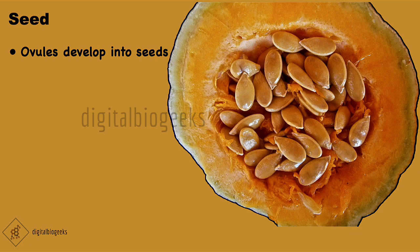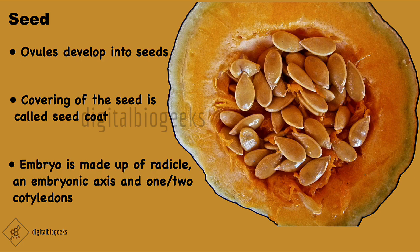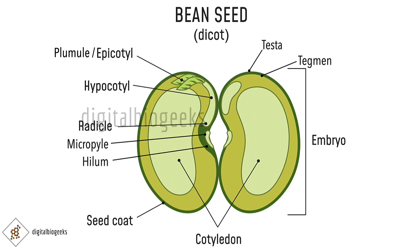The ovary matures to form the fruit whereas ovules develop into seeds. There is a covering on the seed called the seed coat, and inside it is the embryo. The embryo is made up of a radicle, embryonic axis, and one or two cotyledons. The seed coat has two layers: the outer layer is known as the testa and the inner layer is the tegmen. Both testa and tegmen give protection to the embryo, regulate water intake, and can impose dormancy on the seed — inhibiting germination until conditions are favorable.